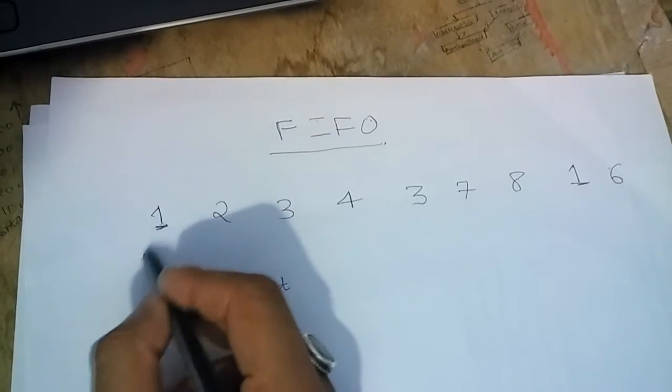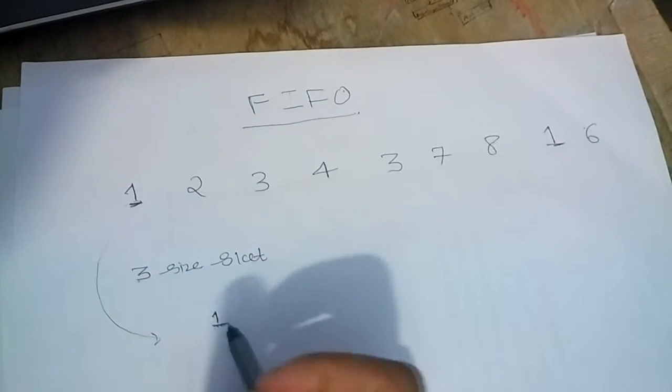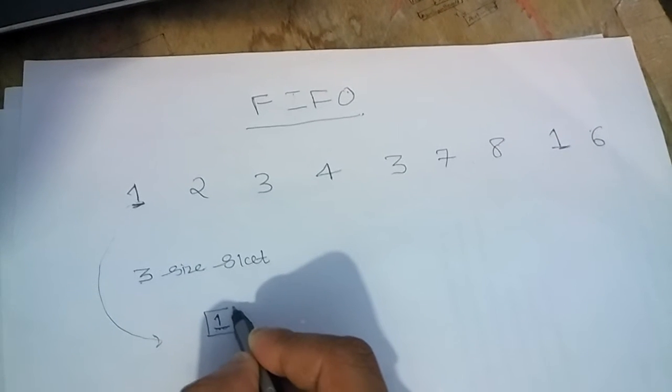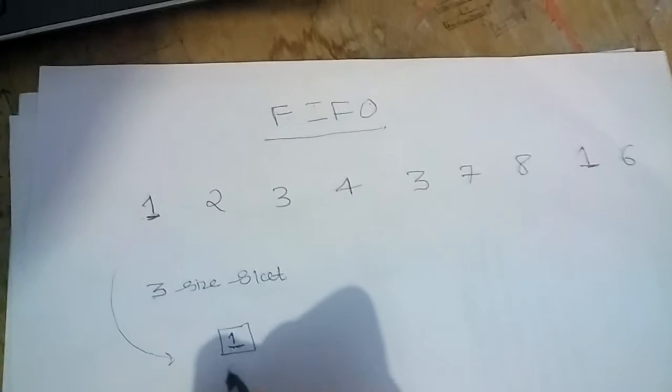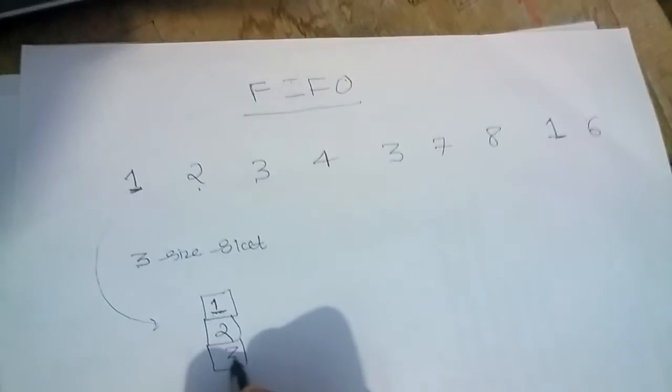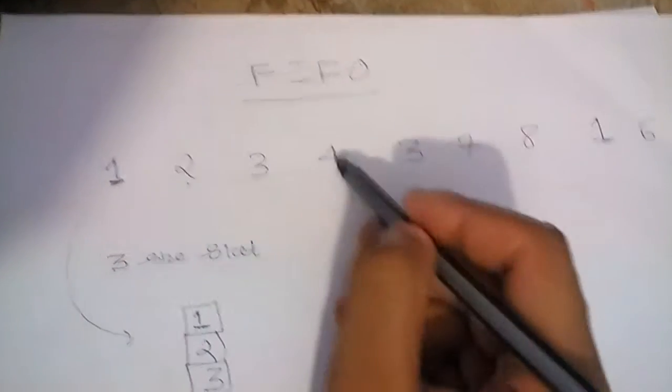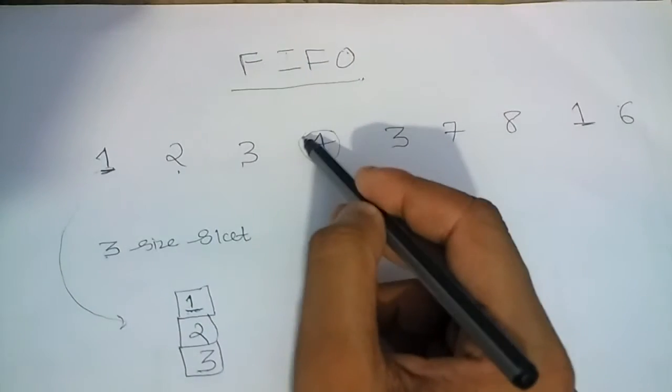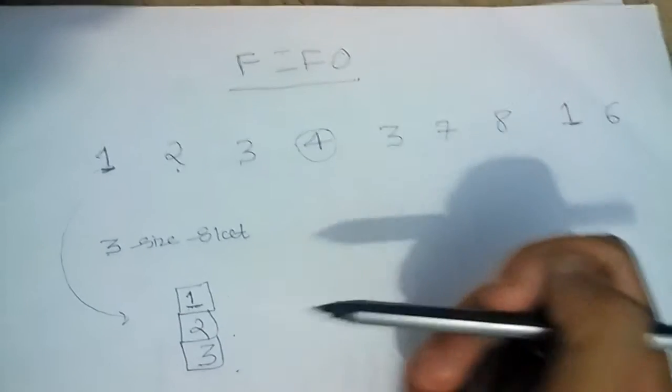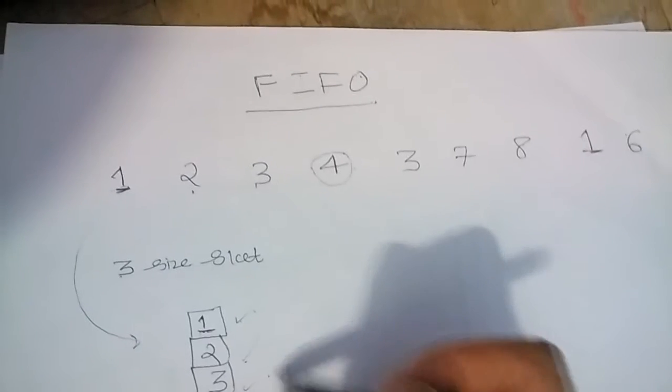Now we bring 1 to the frame. Since we bring it from the memory, here is a fault. Then we brought 2. Then we brought process number 3. So in first in first out, whenever you come across a new process, you have to replace it with the older one. Either 1, 2, or 3. So you will first remove out the first process, then the second one and third one.